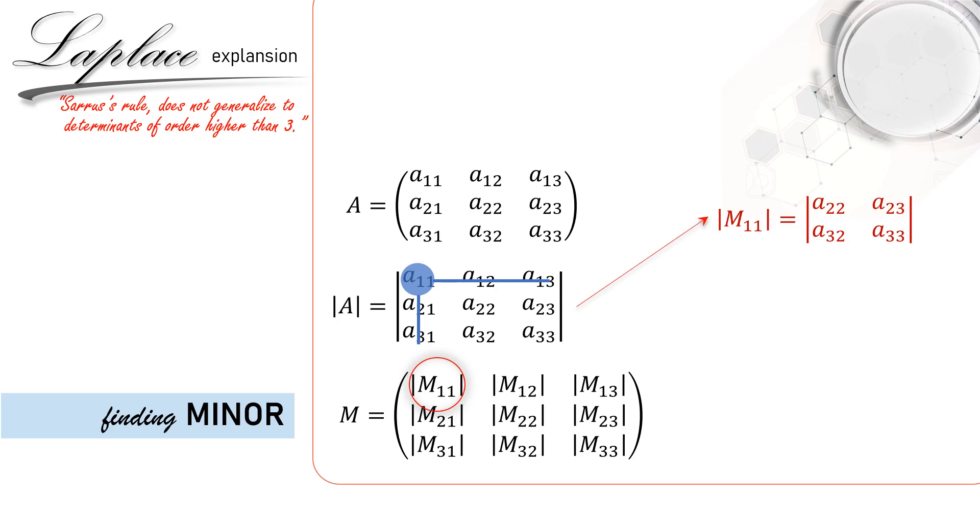Another example, M22 is also a subdeterminant of A obtained by deleting row 2 and column 2 in determinant A. And here is M22. M33 is obtained similarly. Just look at the row and column dimension.